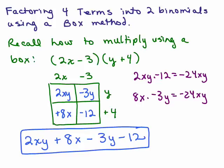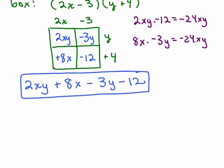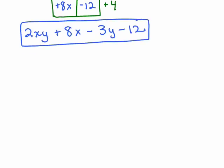To be able to factor 4 terms into 2 binomials, you will have to create a box so the terms in one diagonal multiplied together is the same as the product of the 2 terms in the other diagonal. That's going to be key. So let's say I wanted to, instead of multiply 2 binomials, I was given this problem 2xy plus 8x minus 3y minus 12 and you are asked to factor it.